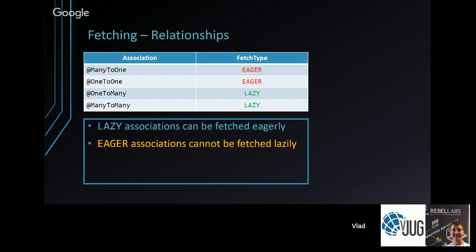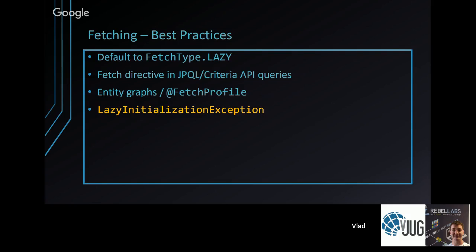Pay close attention to how associations are fetched. One-to-many and many-to-many are lazy by default; many-to-one and one-to-one are eager by default — which is bad because a JPQL query that forgets to fetch a to-one association will trigger N+1 query issues. It's better to default all associations to FetchType.LAZY and then for each business use case explicitly fetch what you need using JOIN FETCH in JPQL, Criteria API, entity graphs, or fetch profiles.